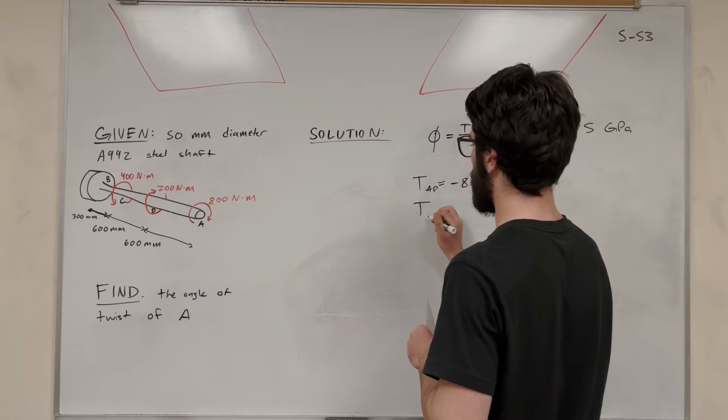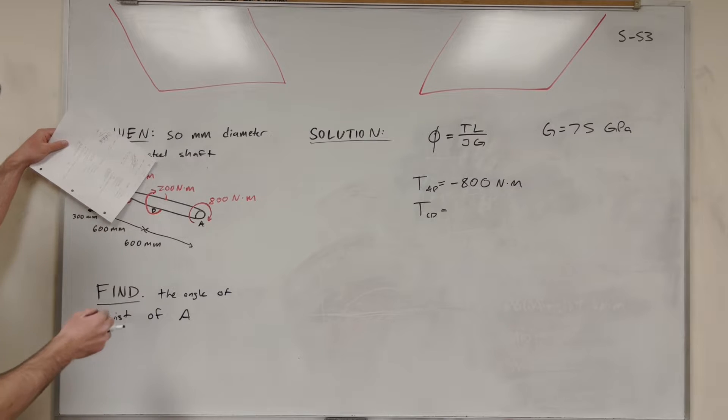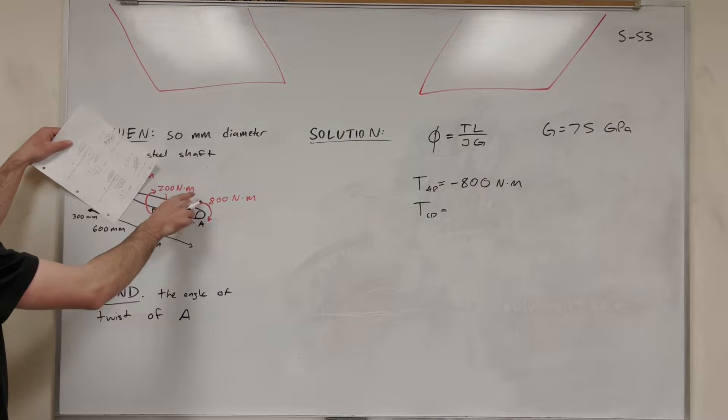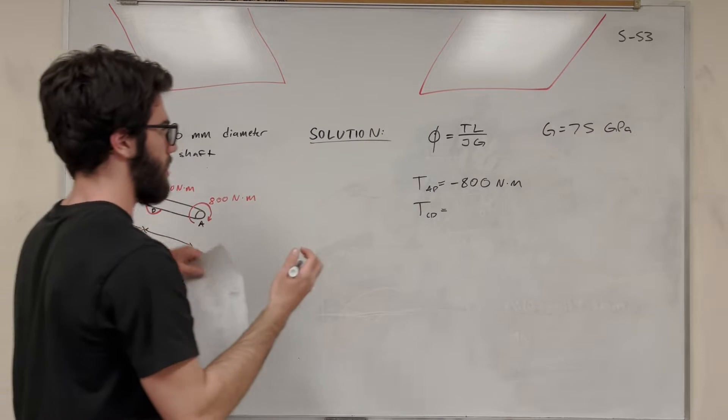Now we're going to find torque in the middle rod, CD. So we're going to take a cut again in CD and work our way inwards. So we have this 800 newton-meter force, and then this 200 newton-meter force. And they're going the same direction. They're both going clockwise. So we need to add those together to get negative 1,000.